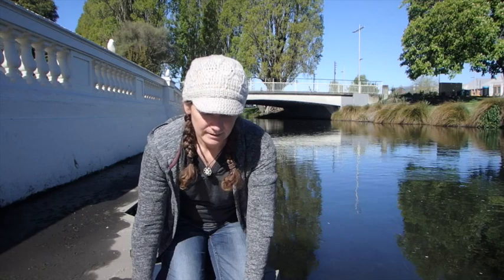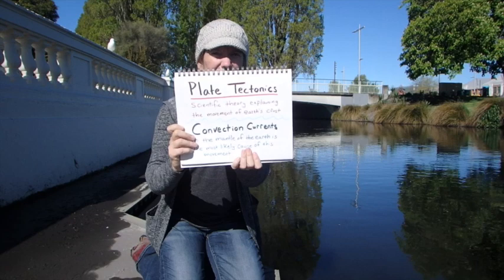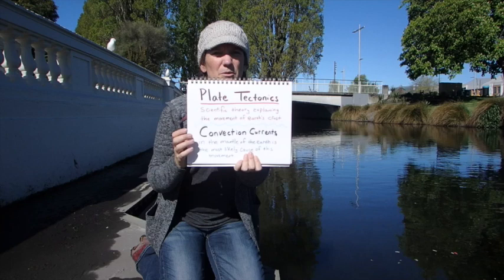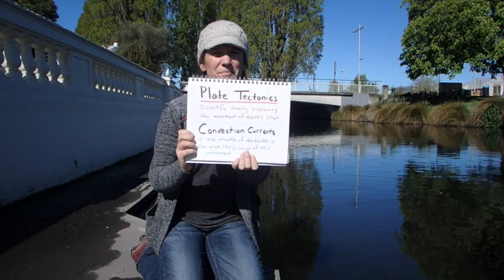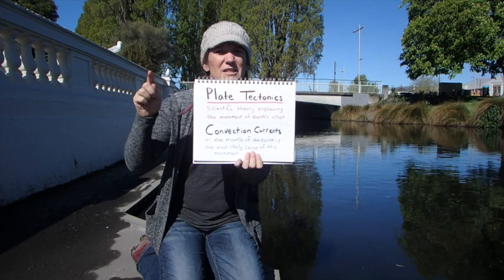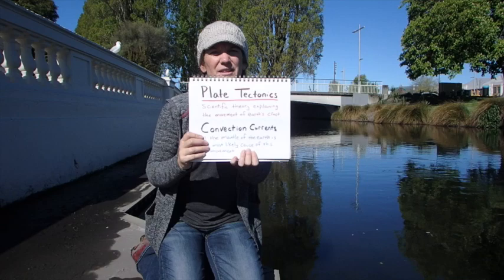To move forward, we need to understand the theory of plate tectonics. This theory says that the earth's crust is in constant motion and explains the way that things have formed. The hypothesis is that convection currents in the mantle — the way the molten rock is moving — is the reason that the plates on earth are moving.